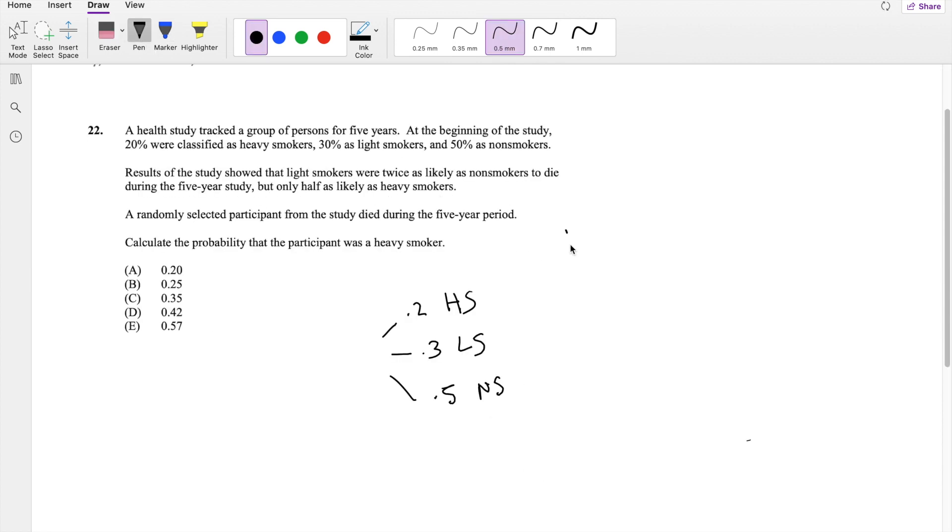So the first sentence says the probability that light smokers die, so death given light smoker, is twice as likely as the probability of death given non-smokers. Sometimes if I get confused about is this right or not, I just think to myself, what's more likely to happen: light smokers dying or non-smokers dying? We know that light smokers have a higher probability of dying.